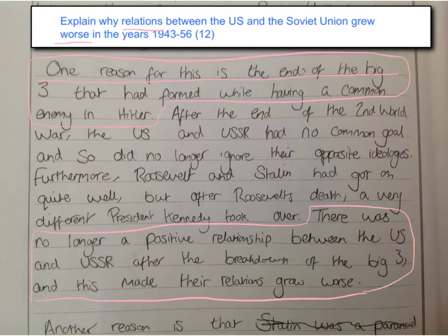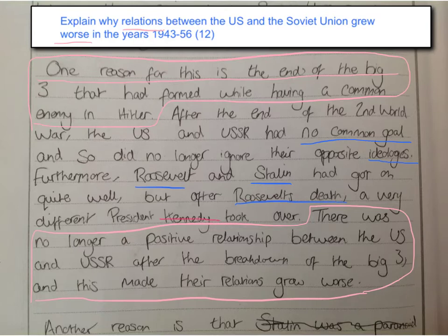I've quite clearly outlined where the tops and bottoms of the sandwiches are. In the middle, they go on to elaborate about why this was an issue, and I like the use of the word ideology here — that they had no common goal. It's all good, mentioning Roosevelt and Stalin by name as well, and referring to Roosevelt's death. I do have to point out one slight error though: it wasn't Kennedy, it was Truman. But other than that, it's a fantastic paragraph.